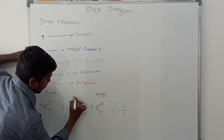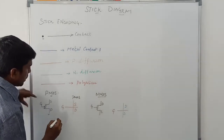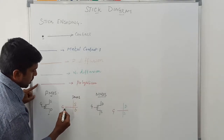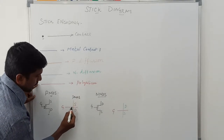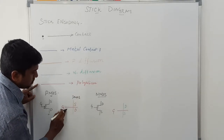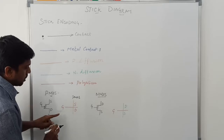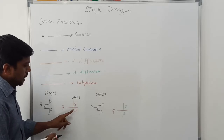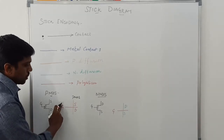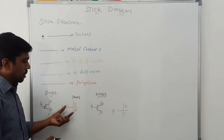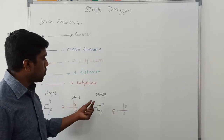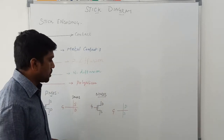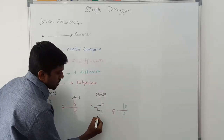For the PMOS transistor in the stick diagram, yellow color is used for the PMOS diffusion layer. Red color is used for the poly silicon, and you get the gate terminal from this poly silicon using the red line. This is the symbolic representation of the PMOS transistor.